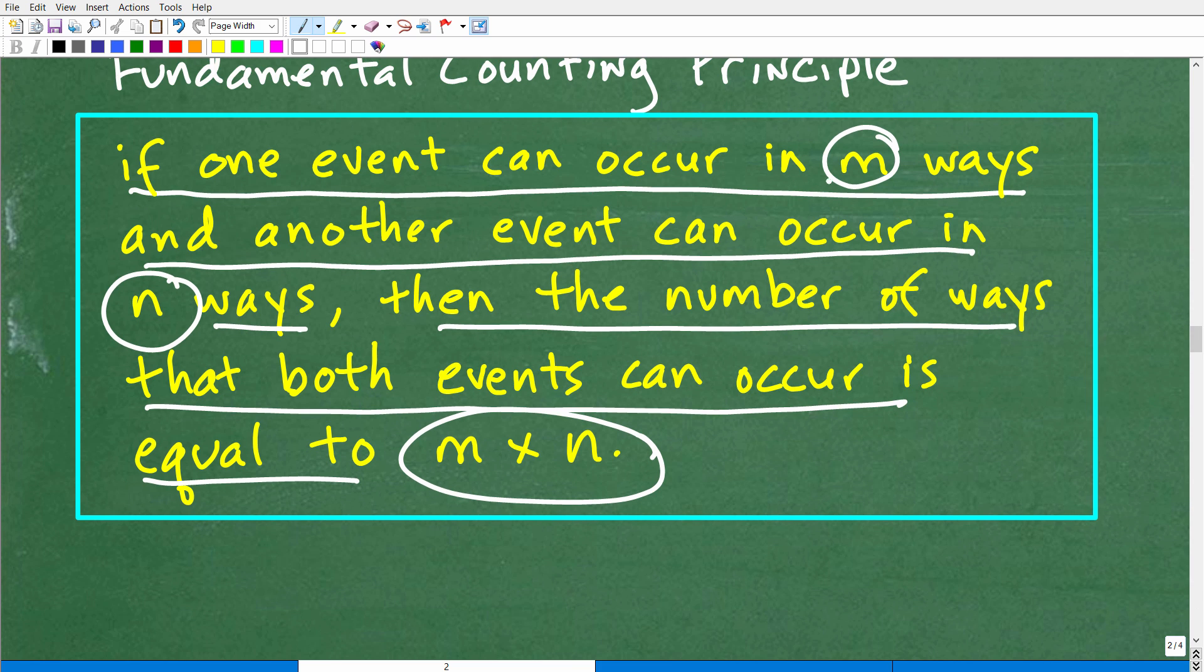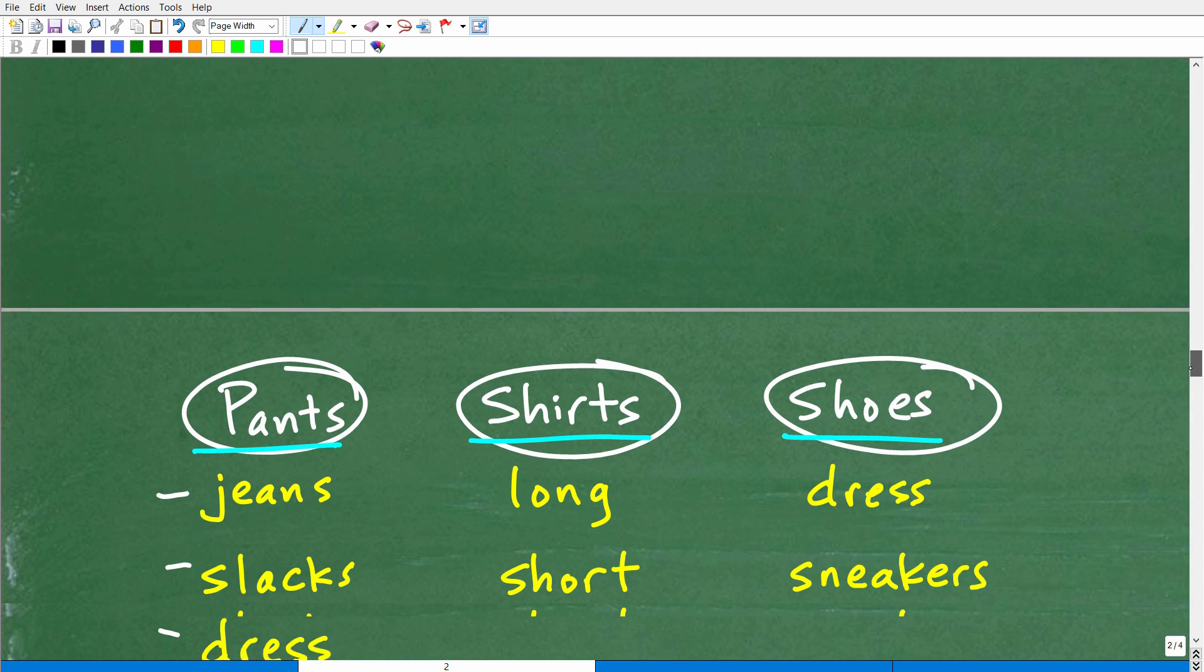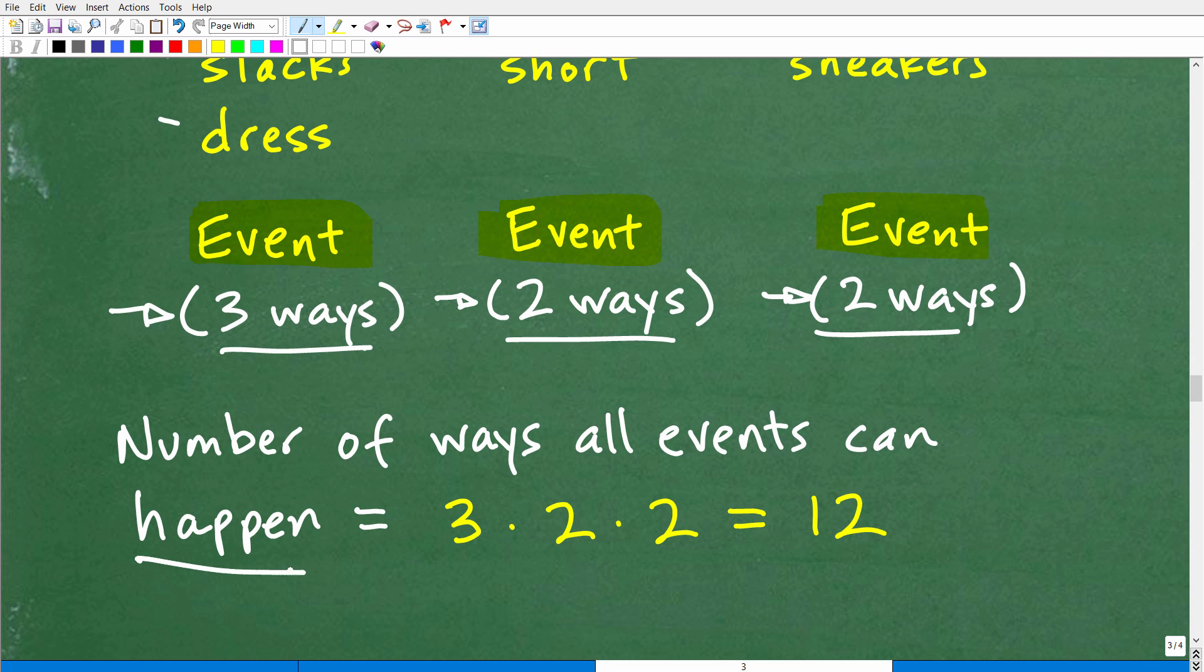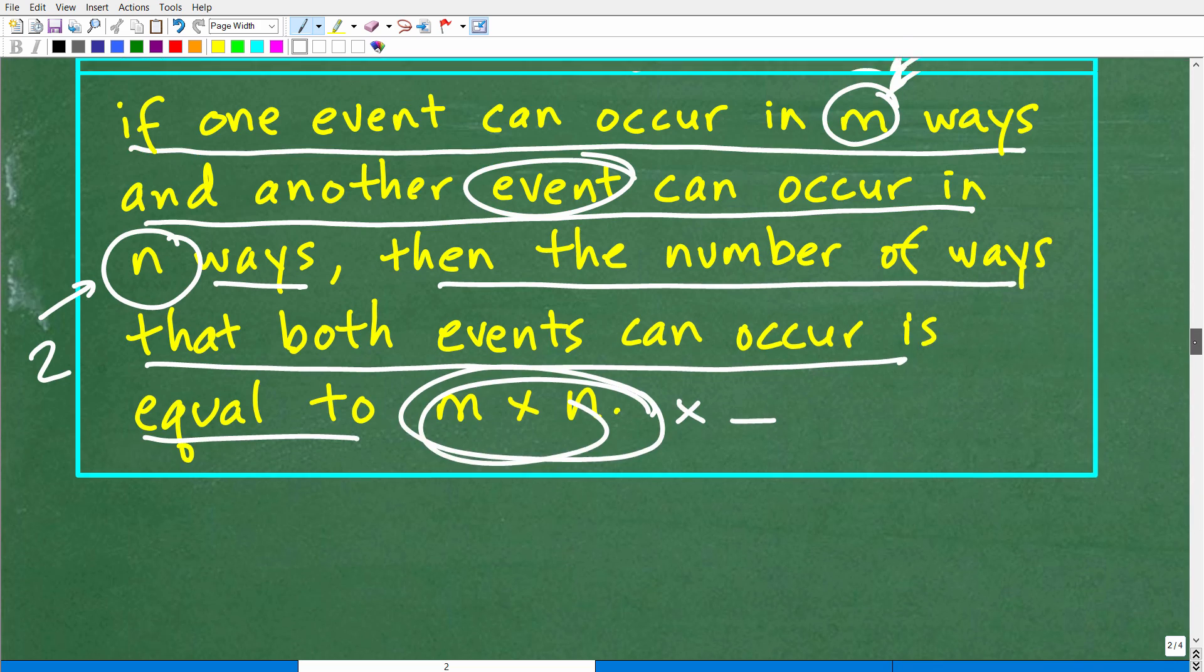Let's think about our selection of our pants. It can happen in three ways. And another event, maybe this other event is the selection of our shirt. That can happen in two ways. Then the number of ways that both events can happen is equal to we multiply these numbers together, M times N. This can go on for as many events as possible. If you have another event, we just continue to multiply however many events we have. So when we do this, we have three events, a selection of our pants, shirts, and shoes. The number of ways all these events can happen is going to be three times two times two, which, of course, is 12.